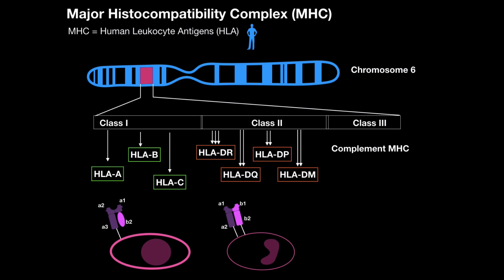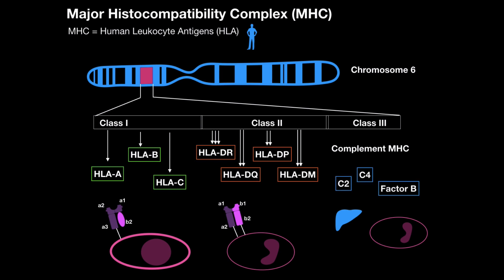Even though most of the complement proteins are made in the liver, some can actually also be made in the macrophages — like C2, C4, and factor B.